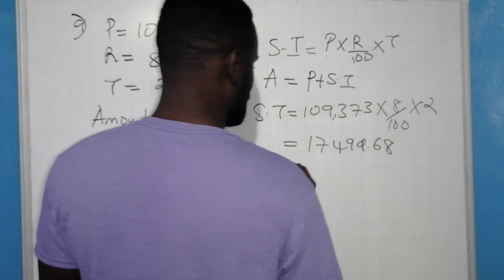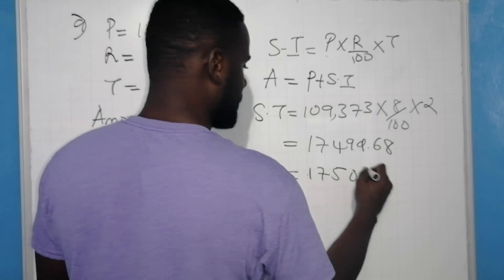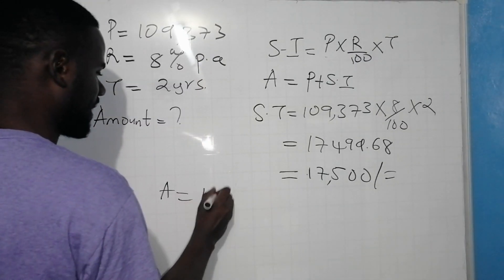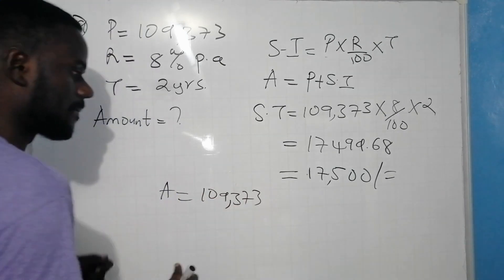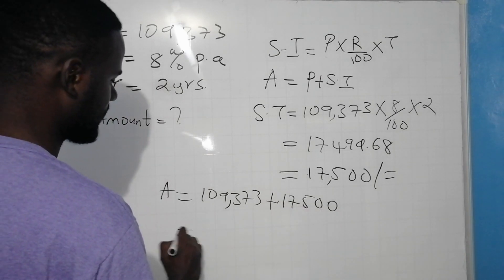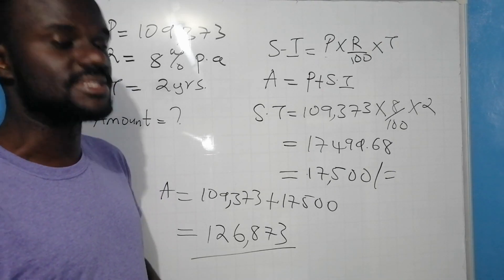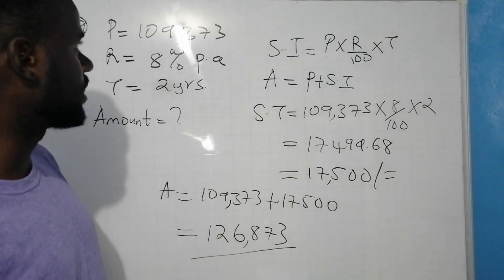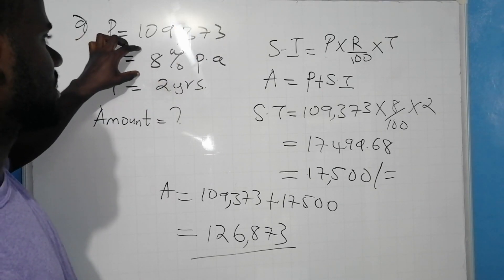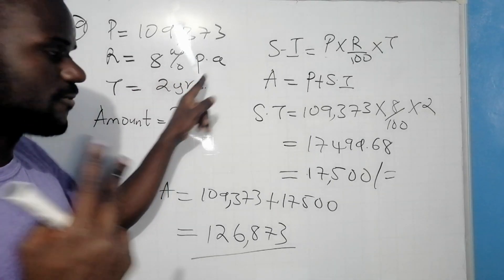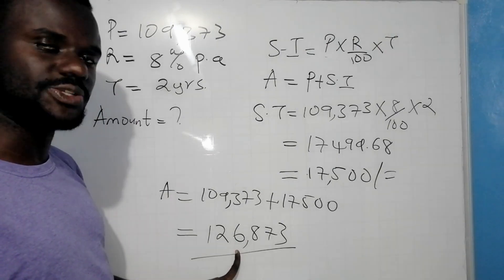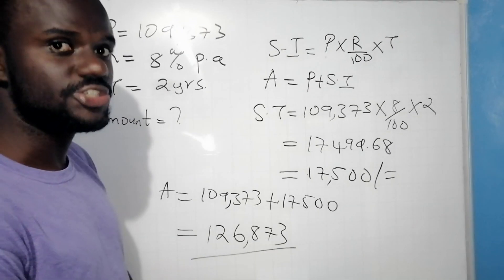Therefore, the simple interest is 17,499.68 shillings. The amount should therefore be the principal, which is 109,373 shillings, plus the simple interest of 17,499 shillings, giving us 126,873 shillings. So when Halima invests 109,373 shillings in a bank at a simple interest rate of 8% per year for two years, the amount she will have is 126,873 shillings.